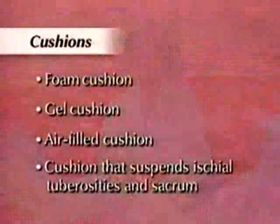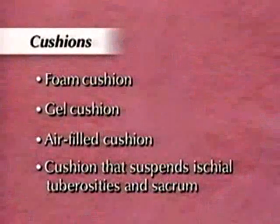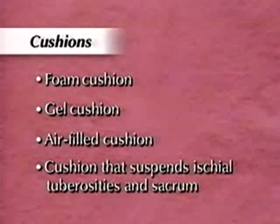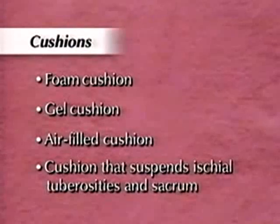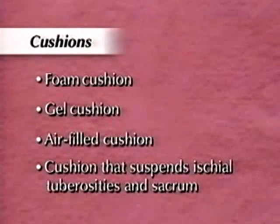If the patient needs help to reposition himself in a chair or wheelchair, assist in obtaining an appropriate cushion, such as a foam, gel, or air-filled cushion, or one that suspends the ischial tuberosities and sacrum. Select the cushion that fits the chair and best meets the patient's needs.